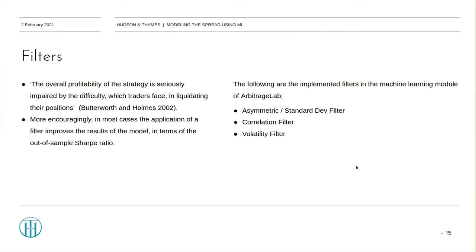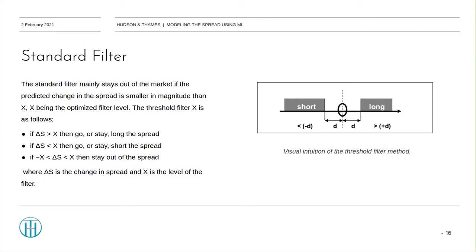The standard filter is a very simple filter. It's basically setting a band, and whenever the predicted spread hits the upper or lower side, a short or buy trade is executed. In the current implementation, the value of the band threshold X has been set in the training stage and kept through the other stages.